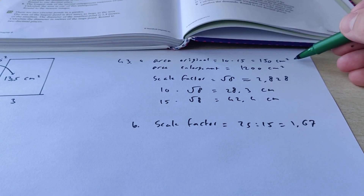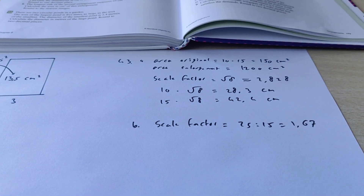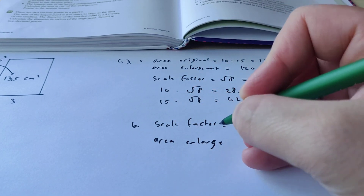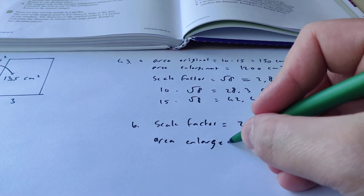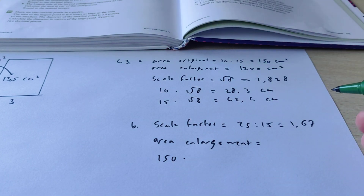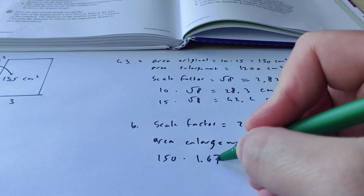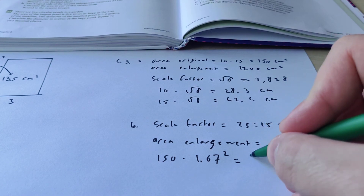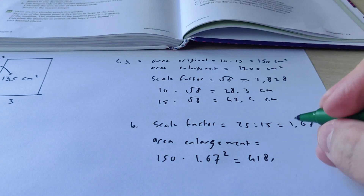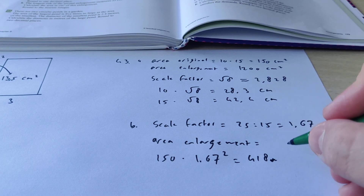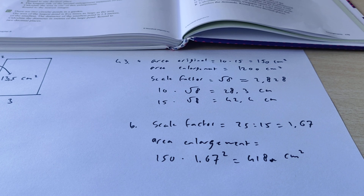We already calculated the area of the original: 150 squared centimeters. To calculate the area of the enlargement, we take the original area — 150 — and multiply it by the scale factor squared. So 150 times 1.67 squared gives us 418 squared centimeters, rounded off to the nearest integer. And this is exercise 43.